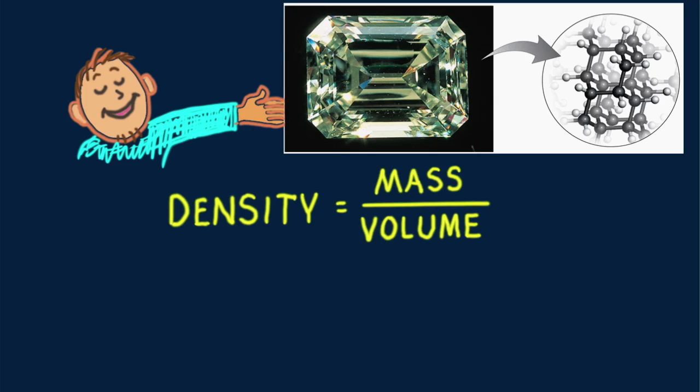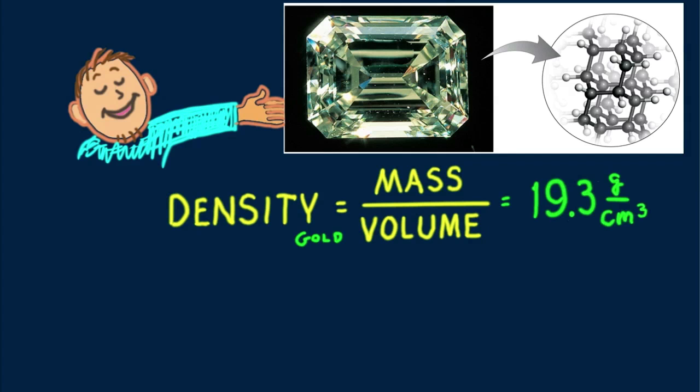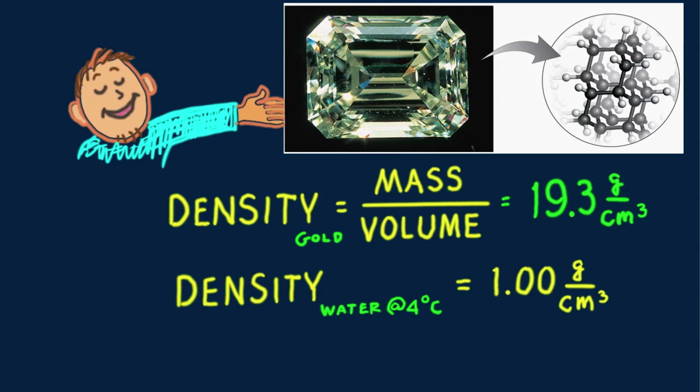A gold nugget or a bar of gold has the same ratio of mass to volume, 19.3 grams per cubic centimeter. Gold is 19.3 times more dense than water. Water at 4 degrees Celsius has a density of exactly 1 gram per cubic centimeter.